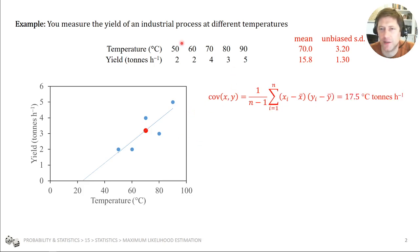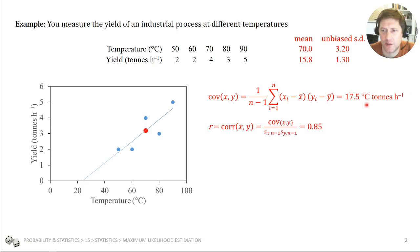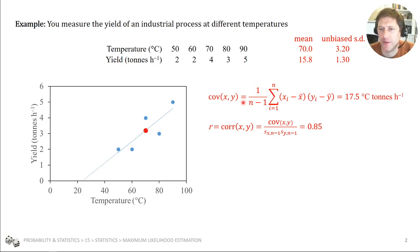We know about the covariance, and for this data we can calculate the covariance — it has units: 17.5 degrees C tonnes per hour. That tells us something about the relationship of X's to Y's and whether they're moving in the same direction, but it's hard to interpret because it's very specific to the particular data. So the Pearson's correlation coefficient divides that by the standard deviations and normalizes it into a value standardized between minus 1 and 1. If using the unbiased definition for covariance, use the unbiased definition for standard deviations — you just have to use the same for both.